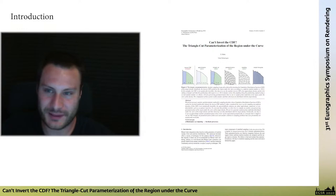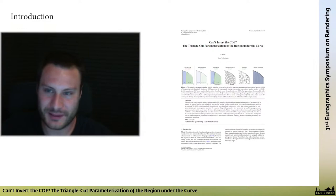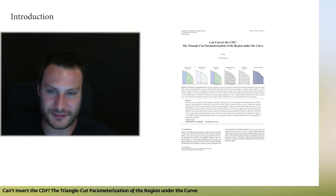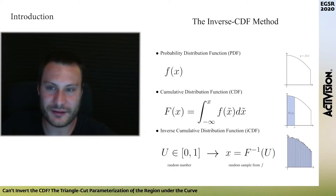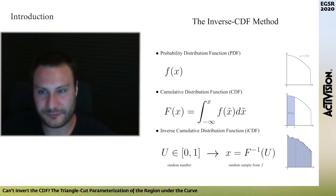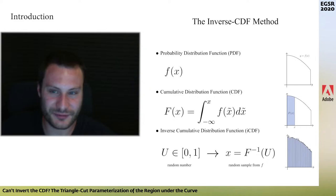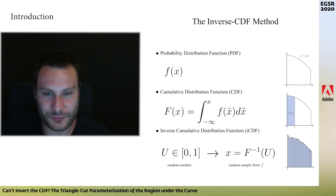My name is Eric Heitz and today I'm going to talk about this EGSR 2020 paper. This is a paper about sampling random points from a target density. One of the most important sampling techniques is called the inverse CDF method, where CDF is the cumulative distribution function — the integral of the PDF, the probability density function. By inverting the CDF, you get a sampling technique for your PDF. It's a very important technique because the vast majority of the sampling approaches we use in rendering are based on this.